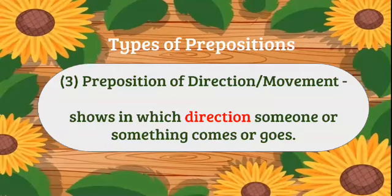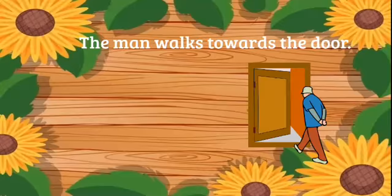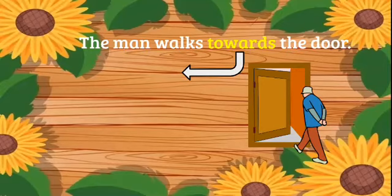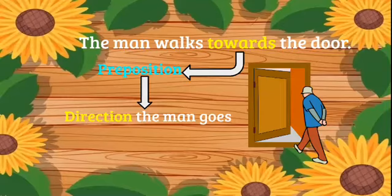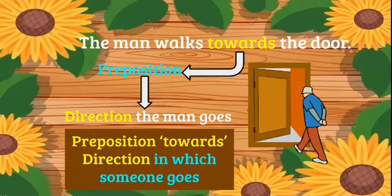Type 3: Preposition of direction or movement. Shows in which direction someone or something comes or goes. Our sentence: The man walks towards the door. Towards being our preposition, showing the direction the man goes. Our preposition towards shows the direction in which someone goes.